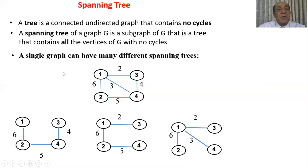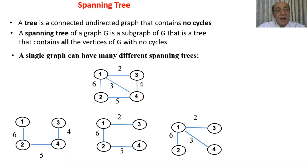First, what is a spanning tree? A tree is a connected, undirected graph that contains no cycles. A spanning tree of graph G is a subgraph of G that is a tree and contains all the vertices of G with no cycles. So in the spanning tree, all the vertices from the graph should be included.